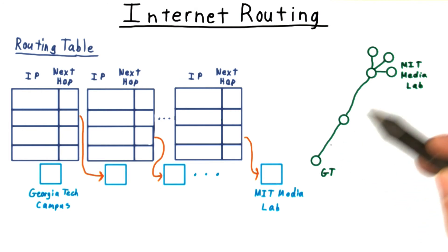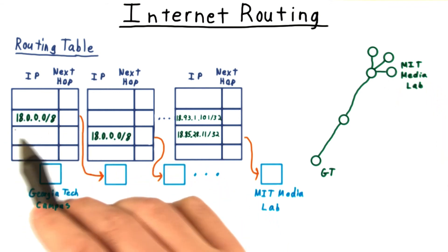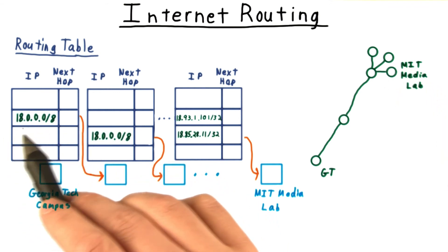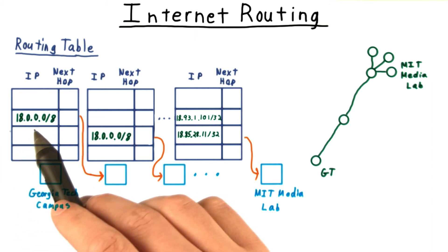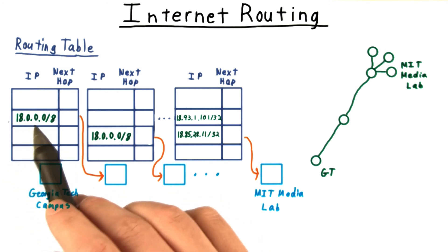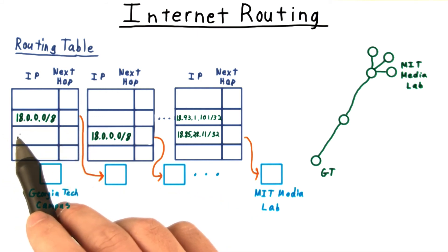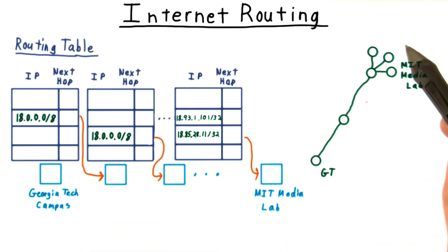All the traffic from Georgia Tech to MIT will likely follow the same first hop or two and only later split in Boston. Therefore, Georgia Tech routers don't need 16 million entries for MIT. One entry that matches anything starting with 18 suffices. All the traffic will be collectively routed up towards Boston.